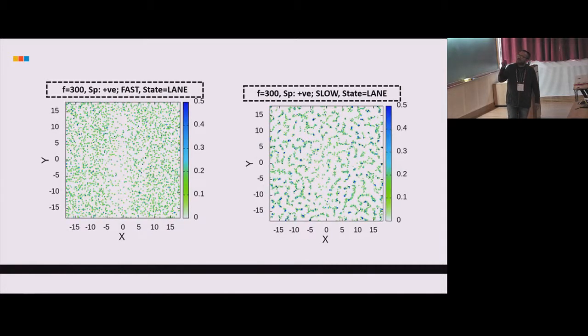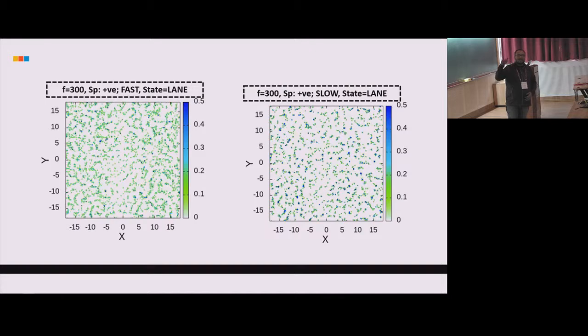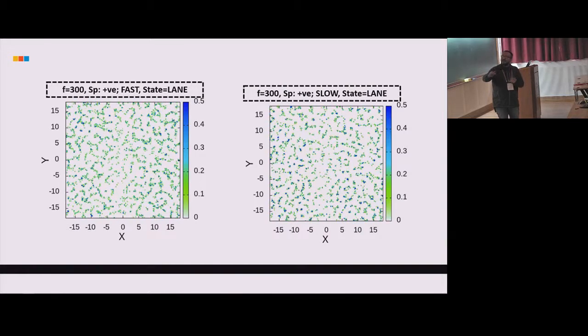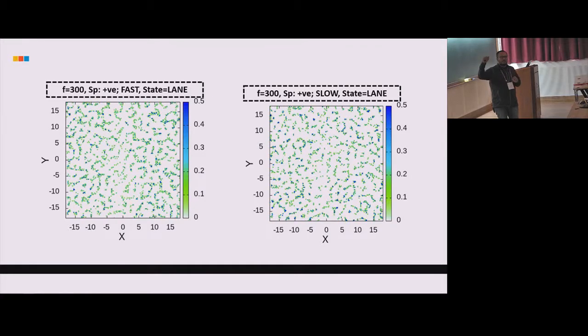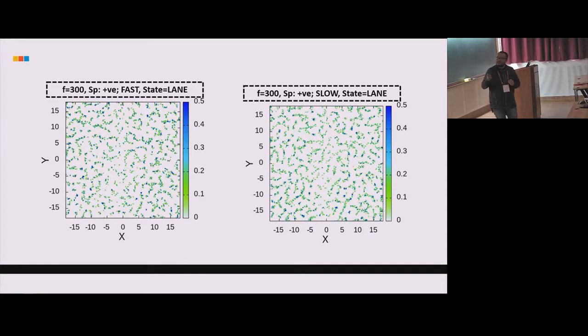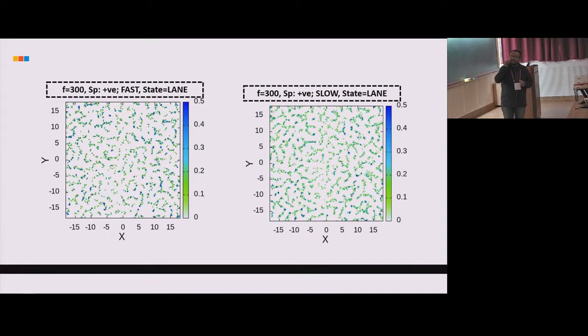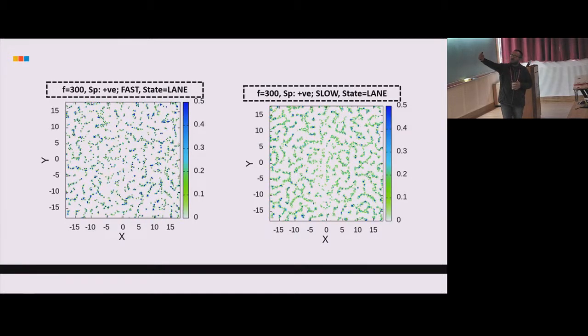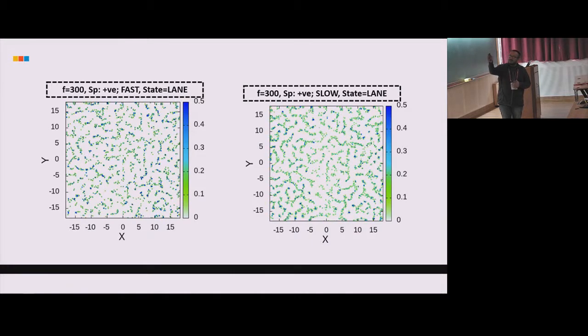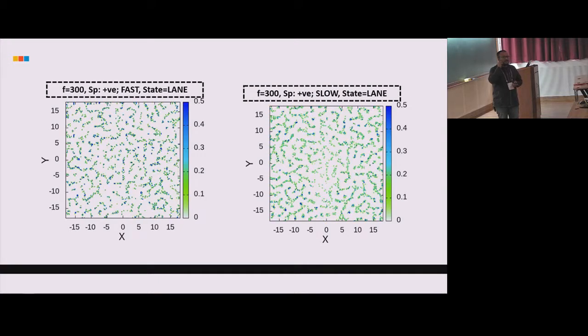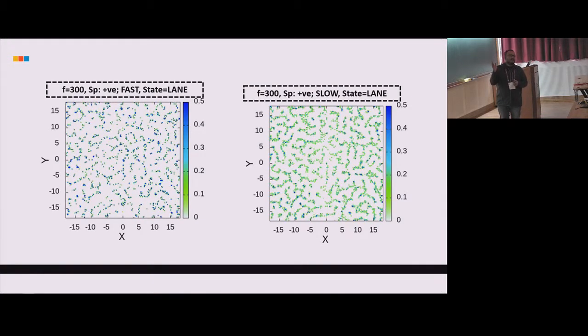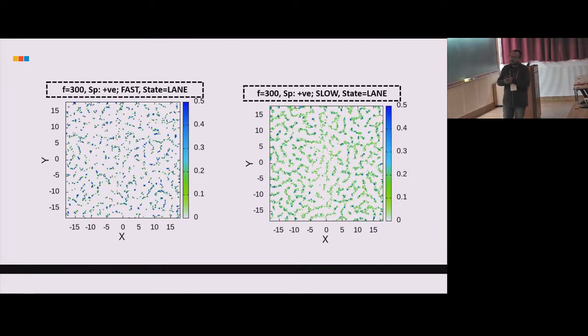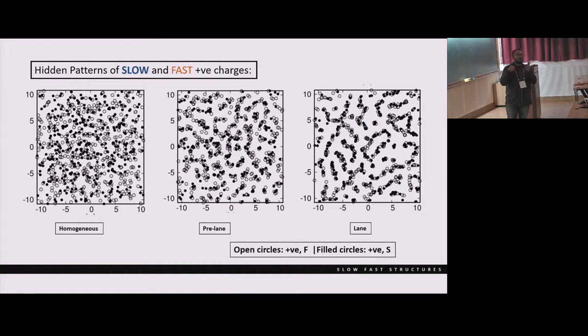This is one typical case where we show the evolution of the patterns for different field strengths. This is for the lane state where we have network-like patterns. We differently show the evolution of slow and fast particles. These movies show that there exist correlations between the slow and fast particles. Even for the slow charges you have this pattern. Also for the fast particles it has got that pattern. Although the rate at which they are changing is not the same. If we project them together, it shows the full laning patterns for a particular charge. This is for one typical case.